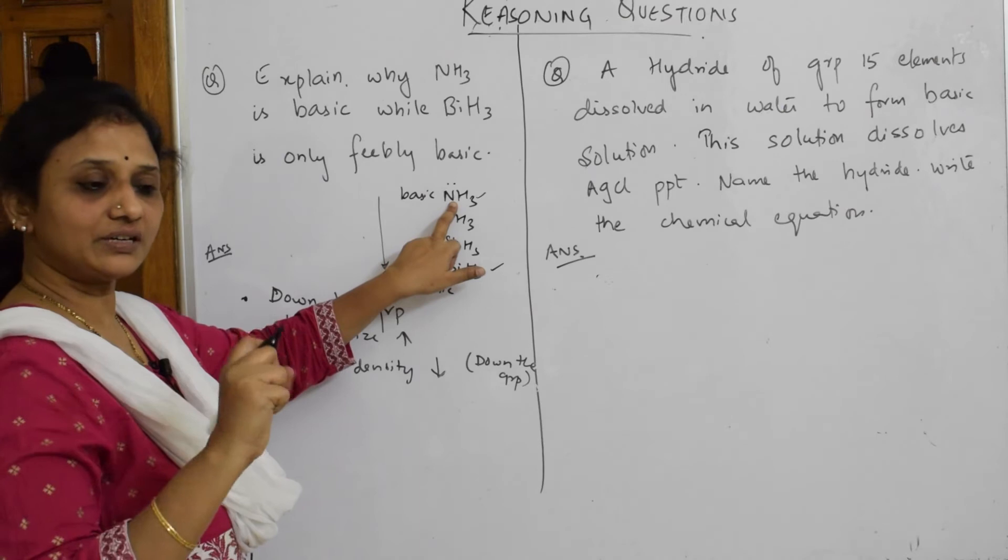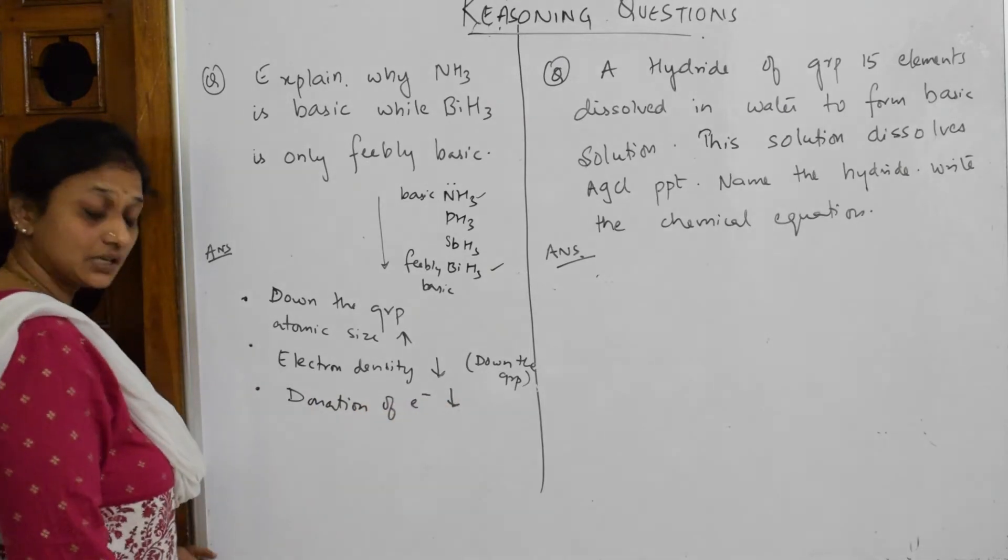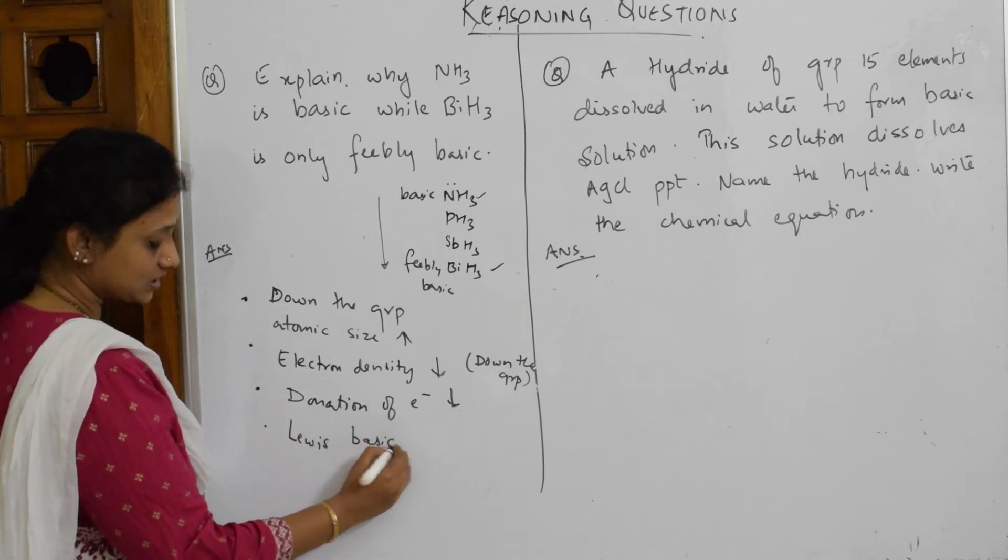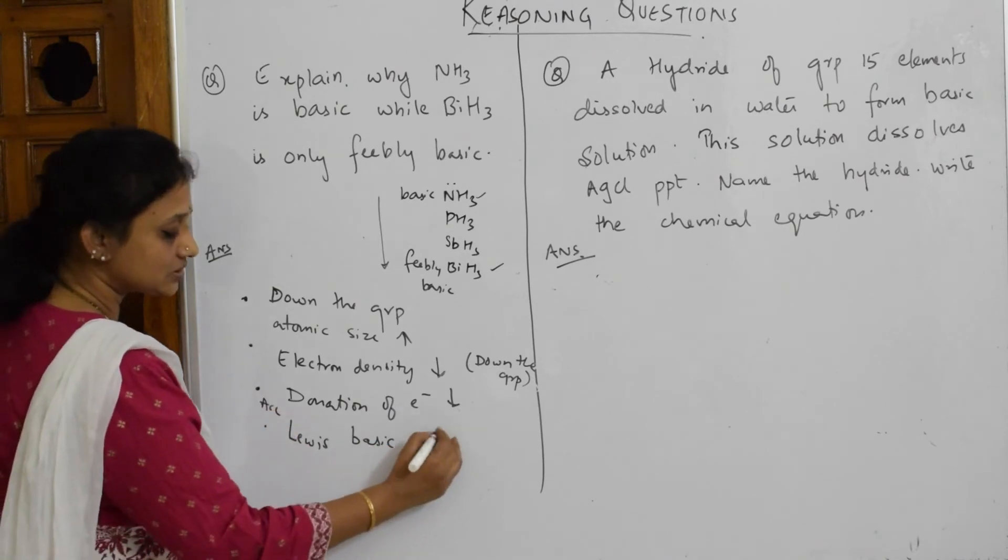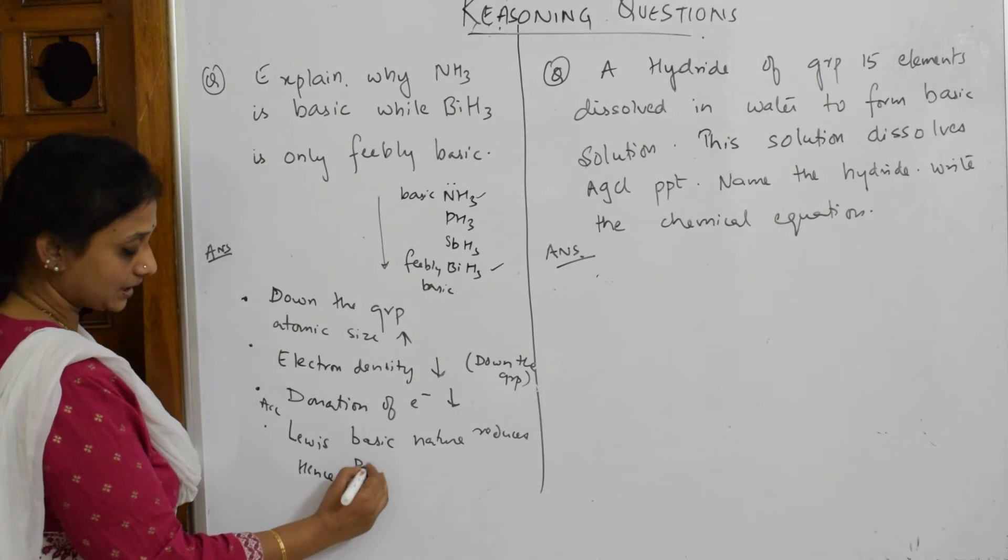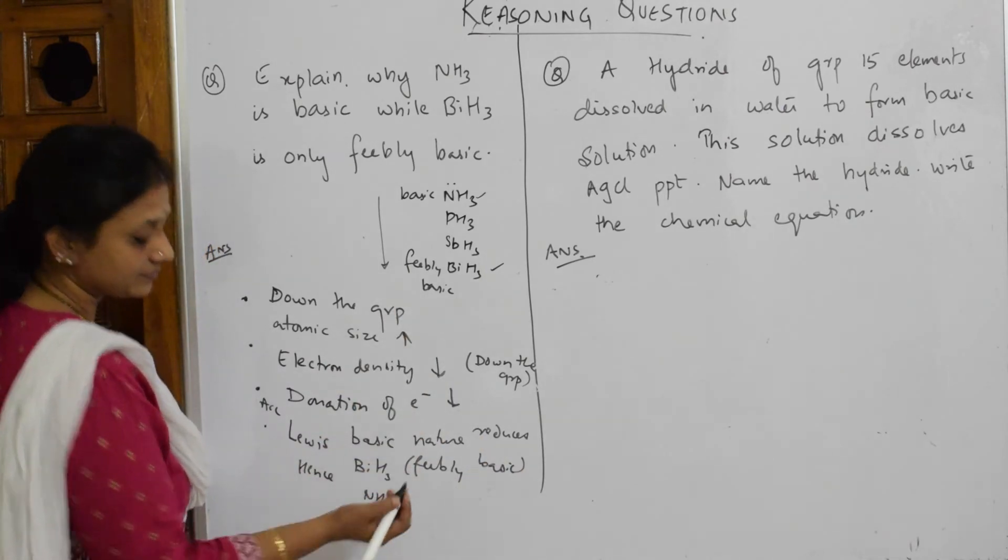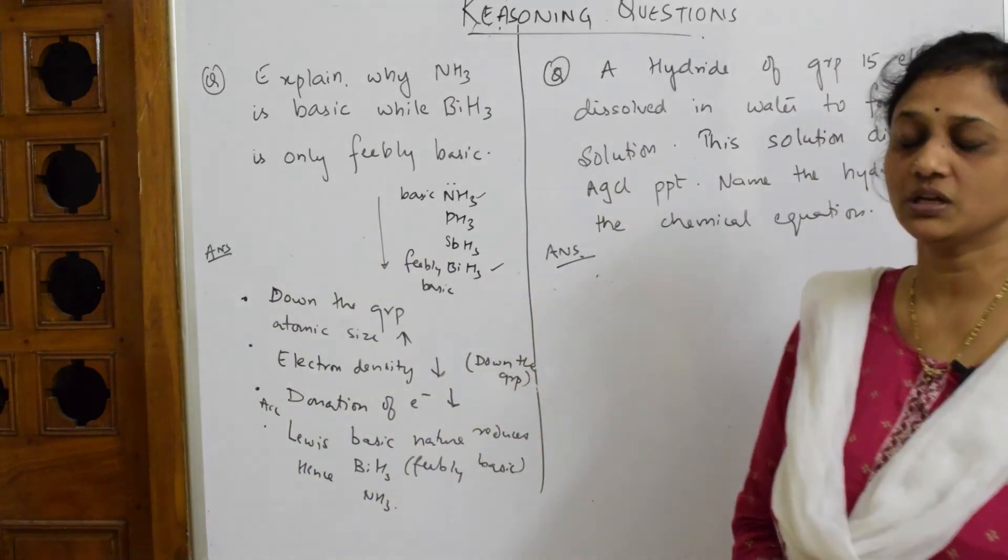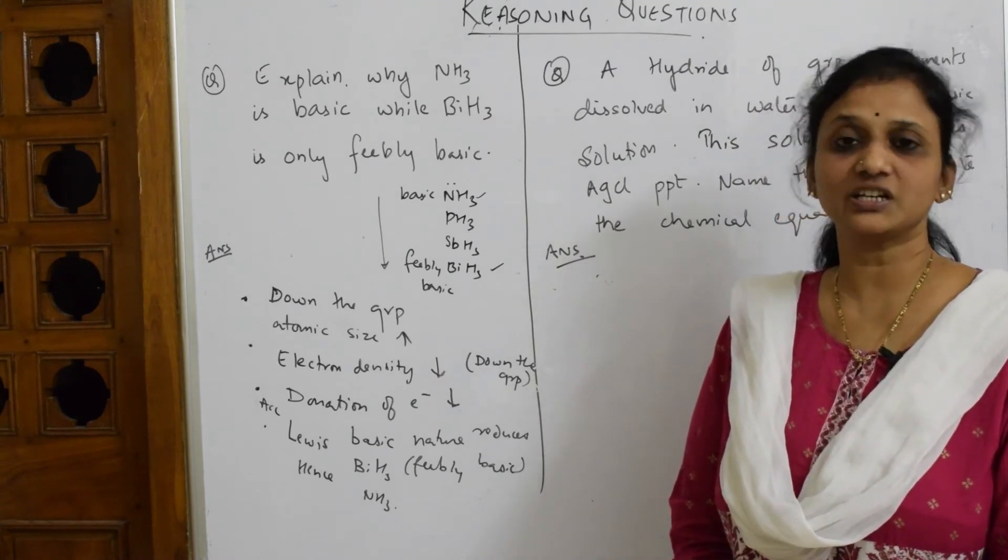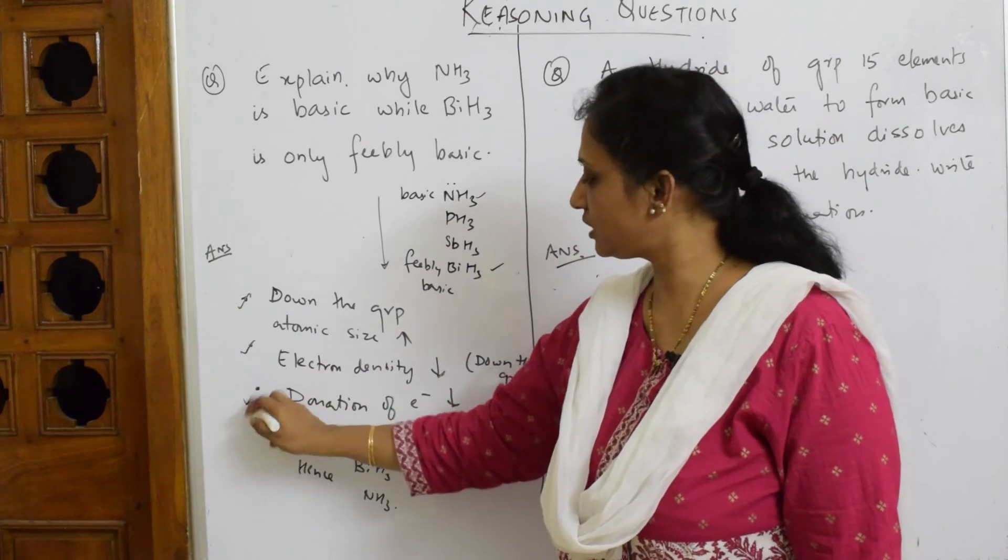Here it's concentrated and can donate, but donation of electrons decreases. When donation of electrons decreases, we know Lewis basic nature reduces. Hence BiH3 is feebly basic compared to NH3. Simple: size increases, dispersion of electron cloud increases, donation of electrons becomes difficult. When it's not donating, it becomes feebly basic. Try to mention these four keywords.